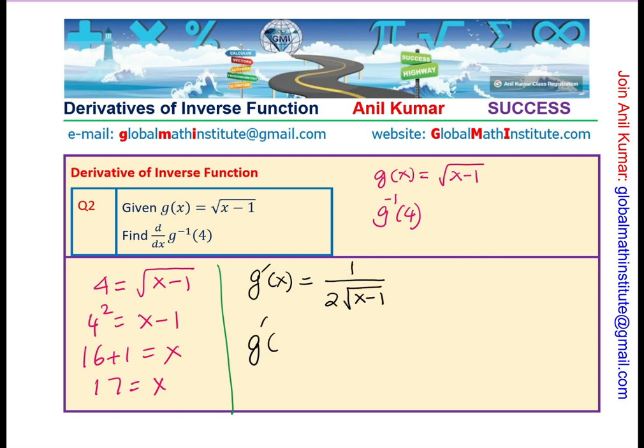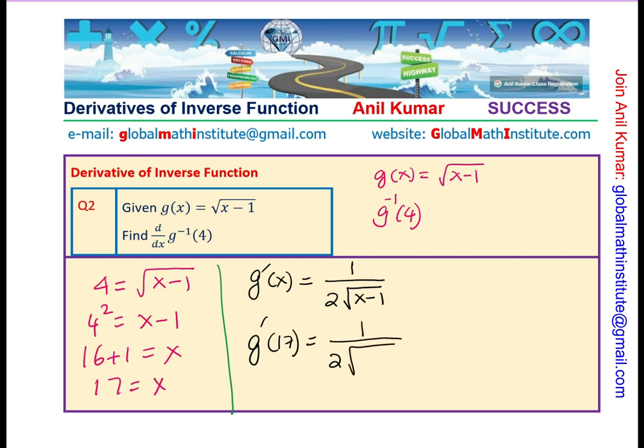Now, this derivative at 17 is how much? Let us substitute the value 17 here and what we get here is 1 over 2 square root of 17 minus 1. Which is equal to 1 over 2 square root of 16. Square root of 16 is 4. 4 times 2 is 8. We get 1 over 8.